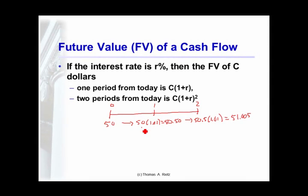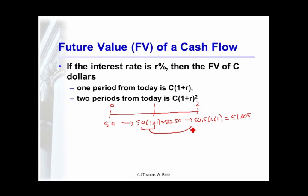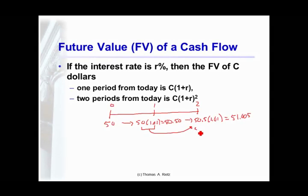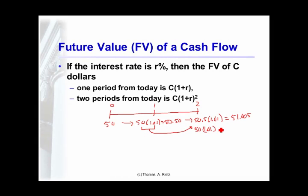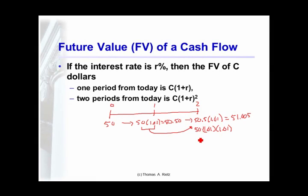Now, if I substitute the fact that $50.50 is just $50 times 1.01 in here, I'm really just multiplying by interest twice, or multiplying by interest squared.